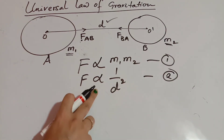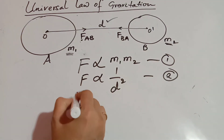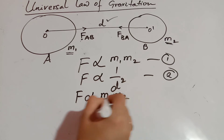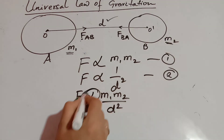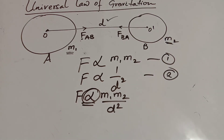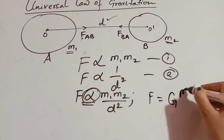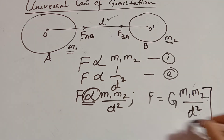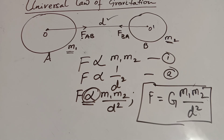It is inversely related to the square of the distance between them. Combining equations 1 and 2, we get F ∝ M1·M2 / D². To remove the proportionality sign, we introduce a constant G, giving us F = G·M1·M2 / D². This is the formula of the universal law of gravitation.